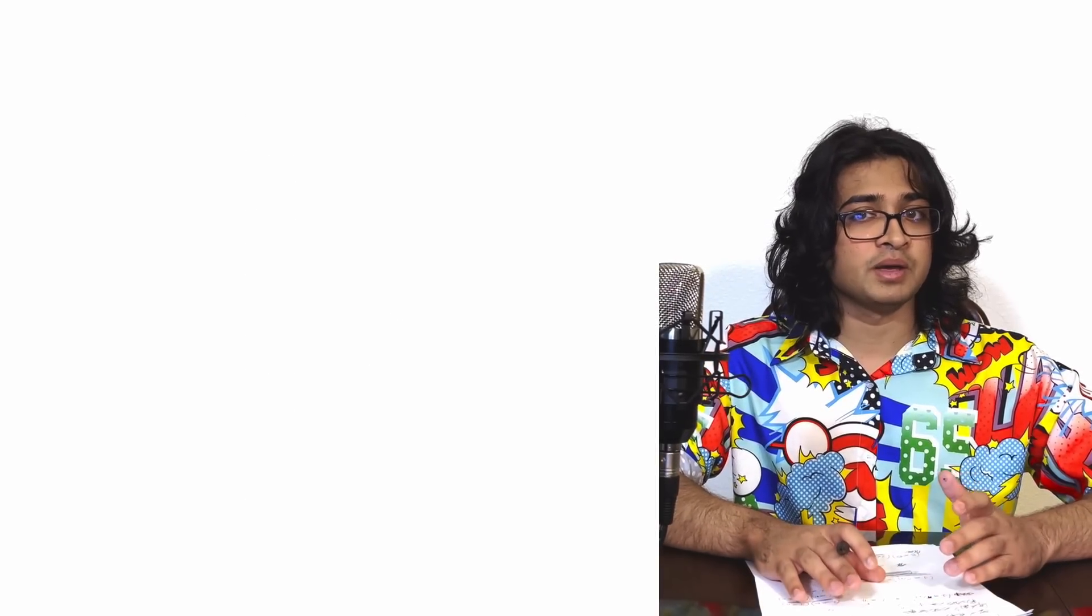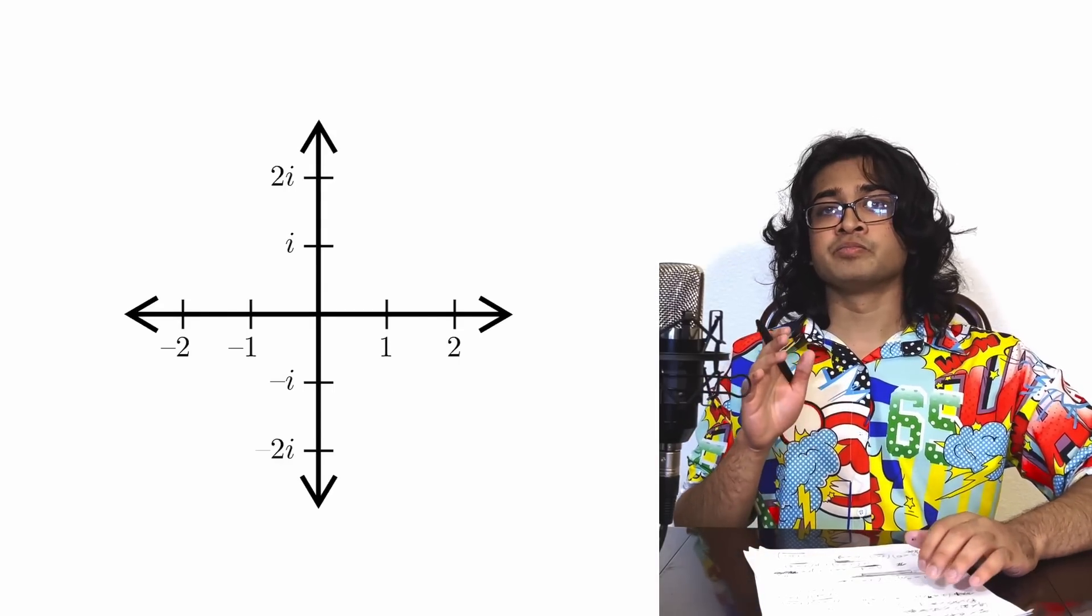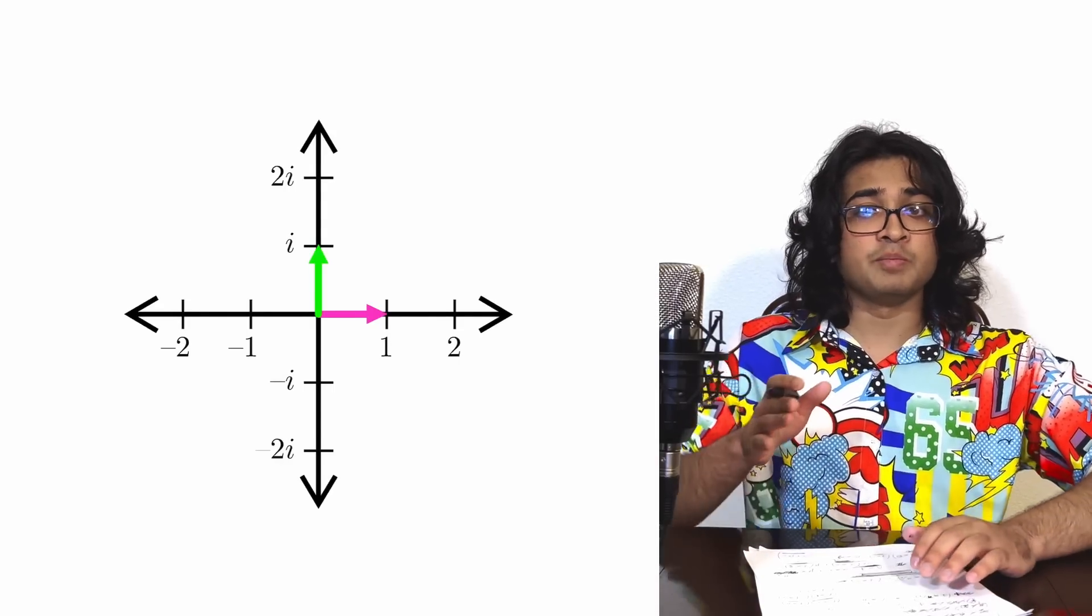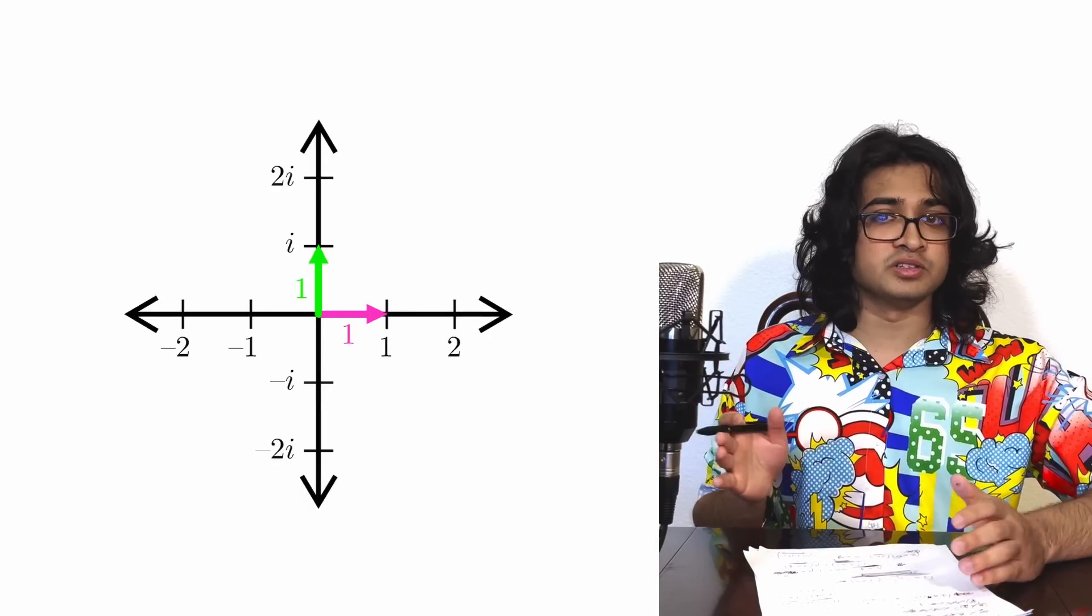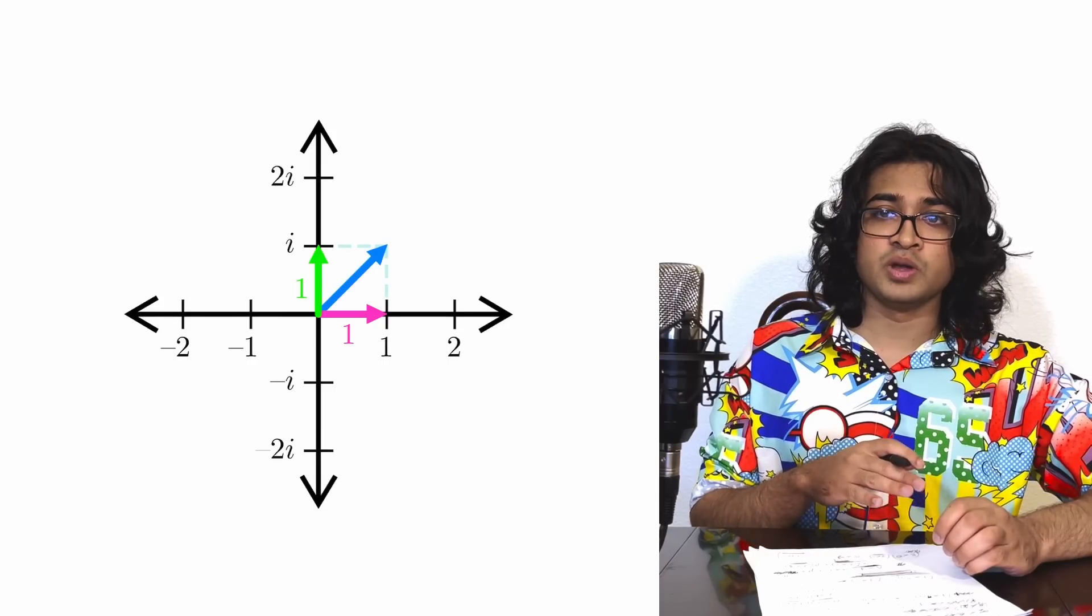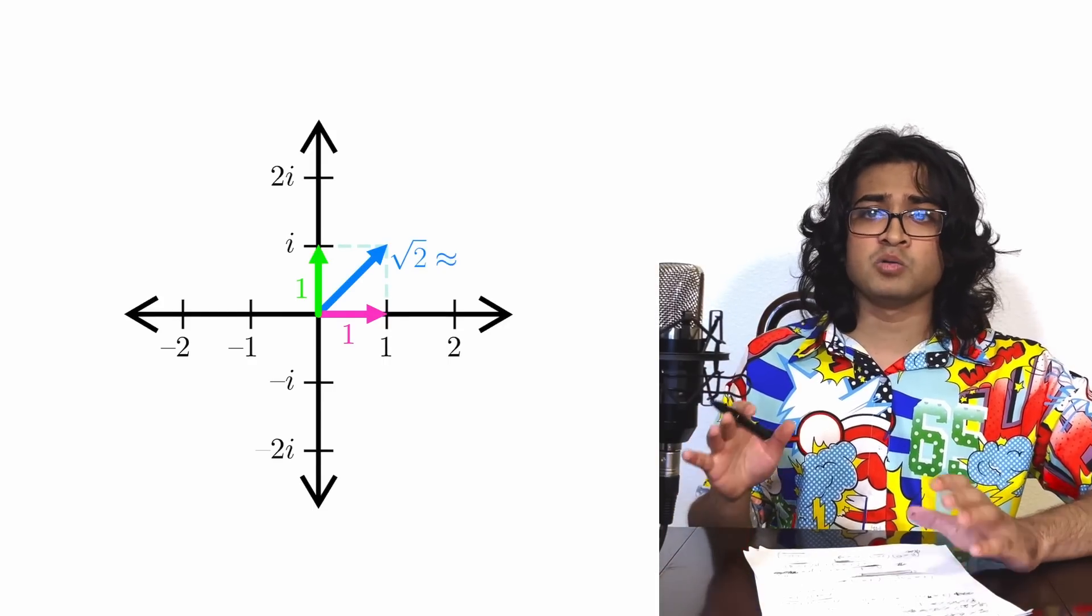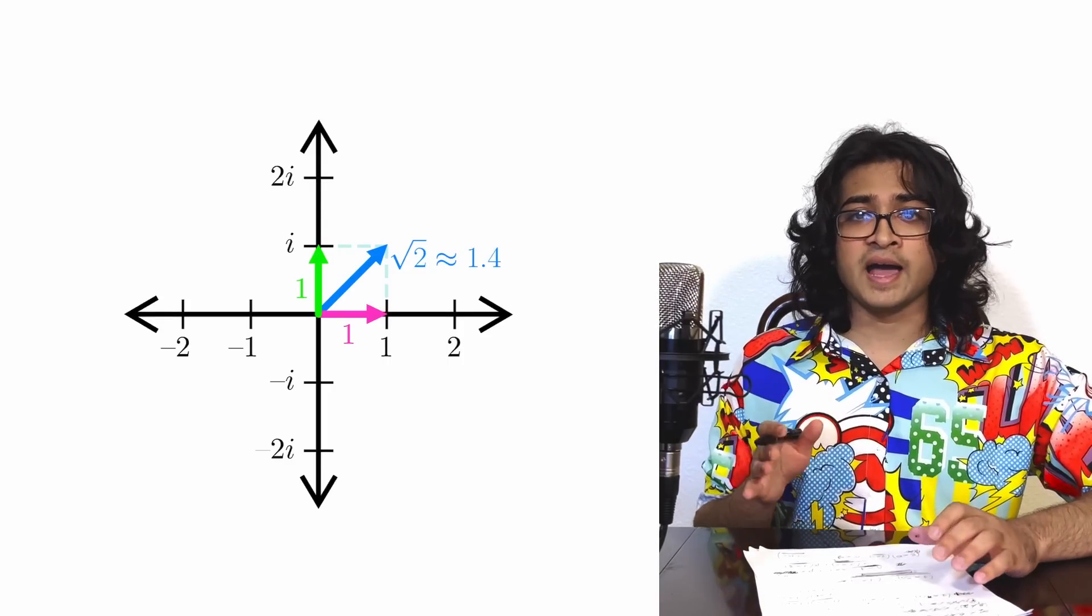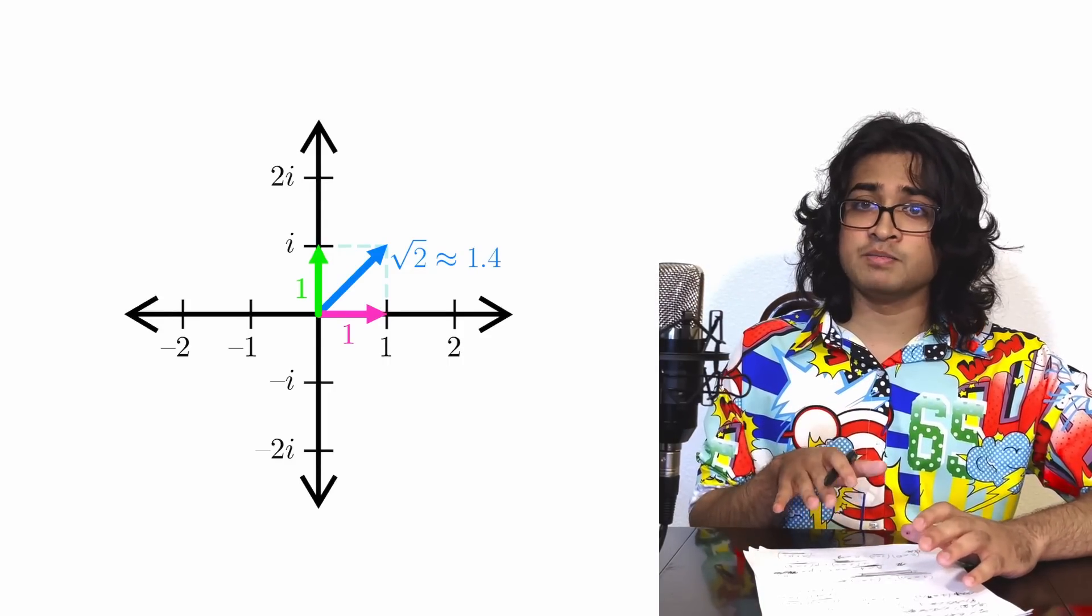Unfortunately, real numbers that have the same amplitude can't partially cancel out. Complex numbers can do this though. As an example, take the numbers 1 and i. They both have a magnitude of 1. The sum of their magnitudes is then 2. If we take the magnitude of their sum though, we get the square root of 2, which is about 1.4. So adding them together made them cancel out a bit, but not completely.